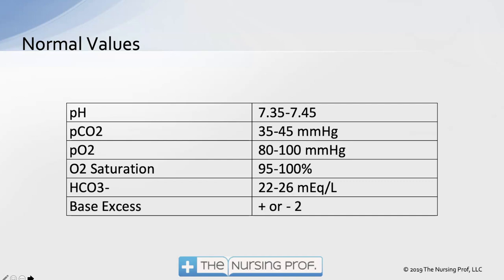We went through the steps of looking at the pH, the CO2, then the bicarb — analyzing each one to determine whether it was normal, acidotic, or alkalotic. We compared either the CO2 or the bicarb with the pH, then asked if the other one goes the opposite direction of the pH. Lastly, we looked at the O2 and the O2 saturation. Here are our normal values; feel free to go back and review the six easy steps again.